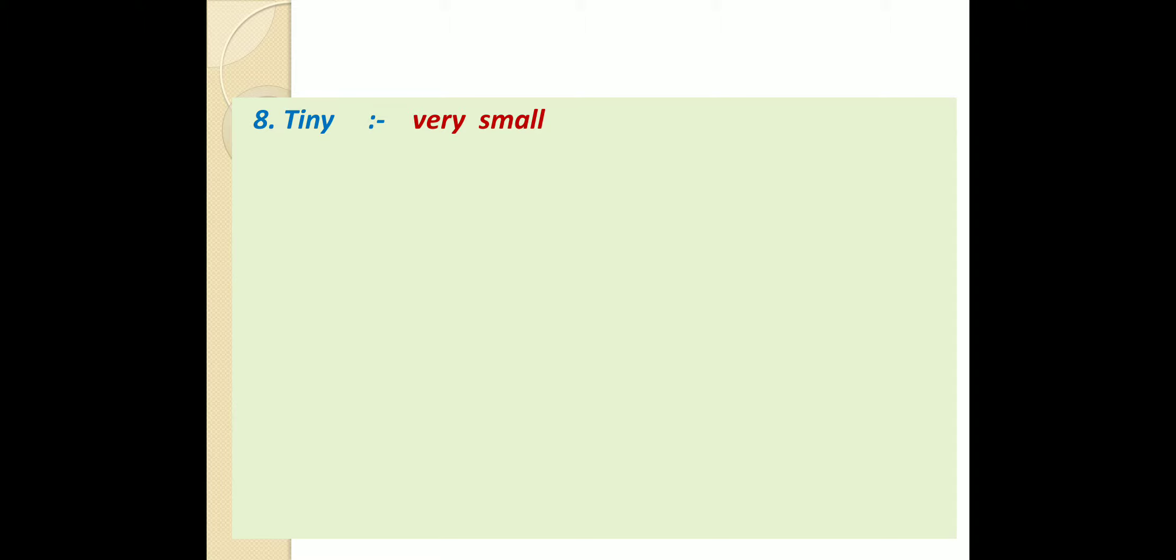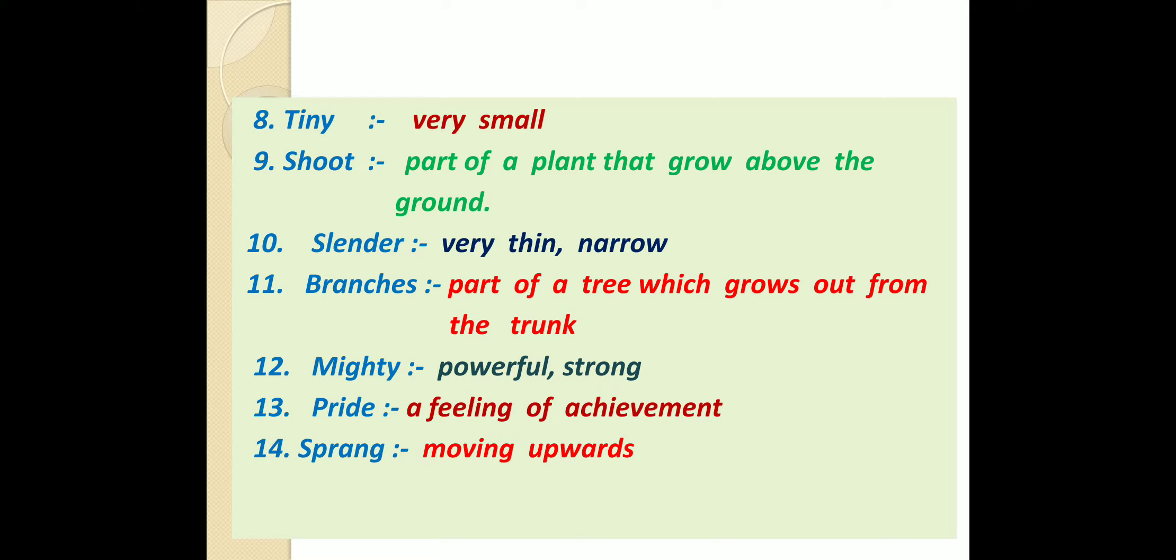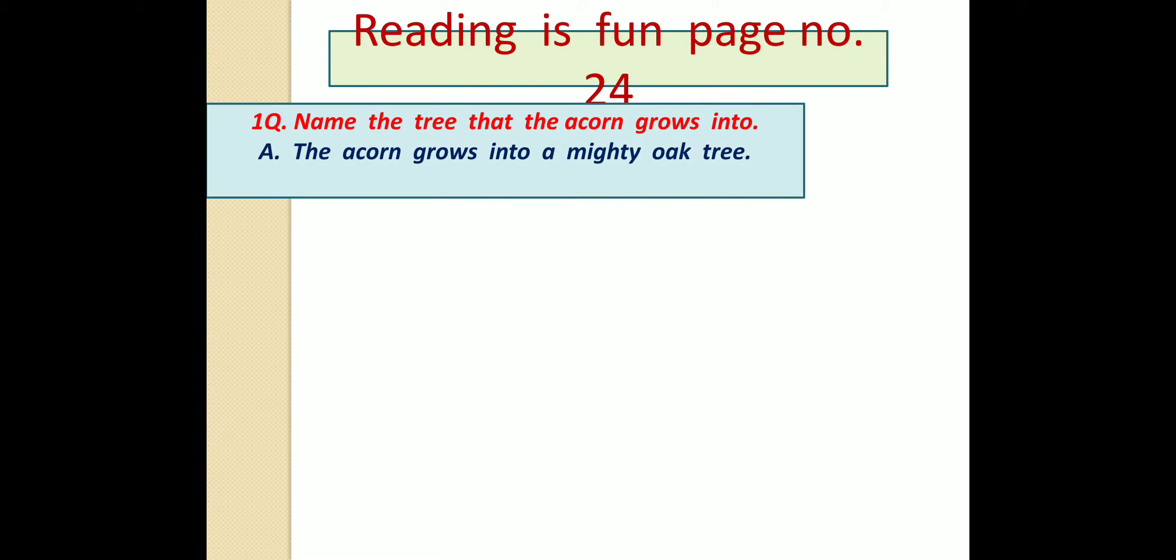Tiny: Very small. Shoot: Part of a plant that grows above the ground. Slender: Very thin, Narrow. Branches: Part of a tree which grows out from the trunk. Mighty: Powerful, Strong. Pride: A feeling of achievement. Sprang: Moving upwards.